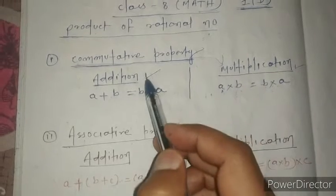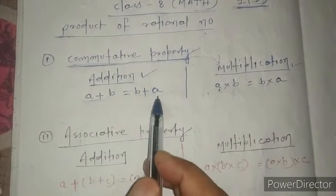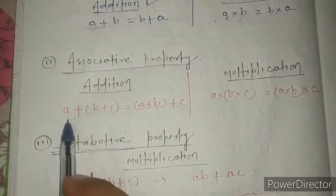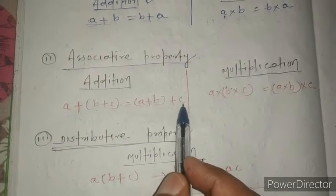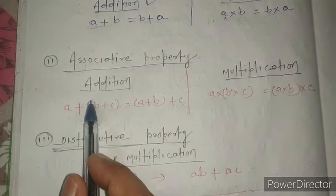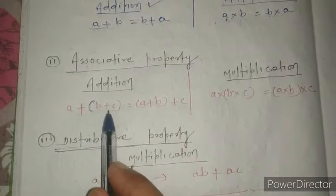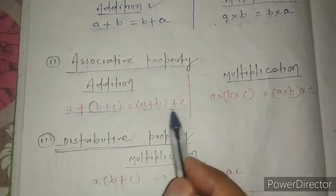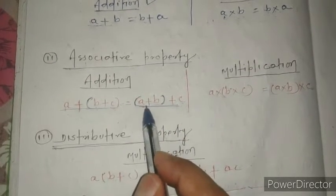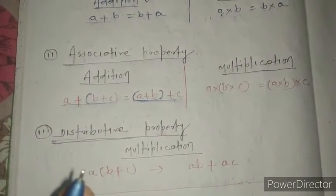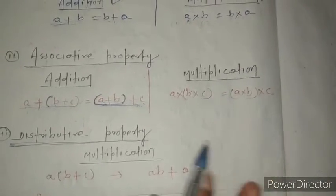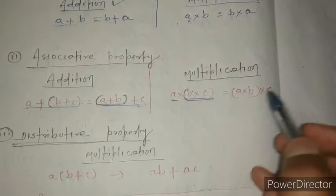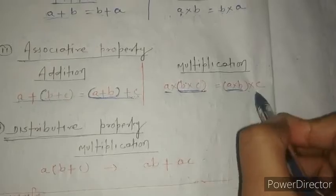In case of addition, whether you add a plus b or b plus a, both results will be the same. Similarly, in case of associative properties, for addition: if we add (a plus b) plus c, it equals a plus (b plus c). According to the rule of BODMAS, if something is in brackets, we solve it first. So whether I add b plus c first then add a, or add a plus b first then add c, both values will be the same. This is called associative property. In case of multiplication, if I calculate this first then multiply with a, the value will be the same as when I multiply a into b first then multiply with c. This is associative property.